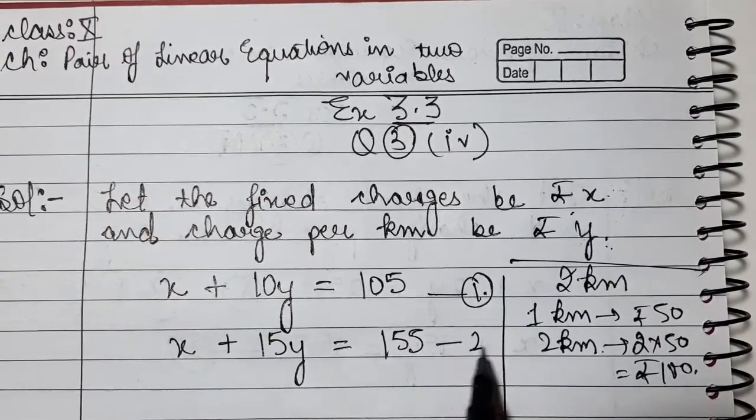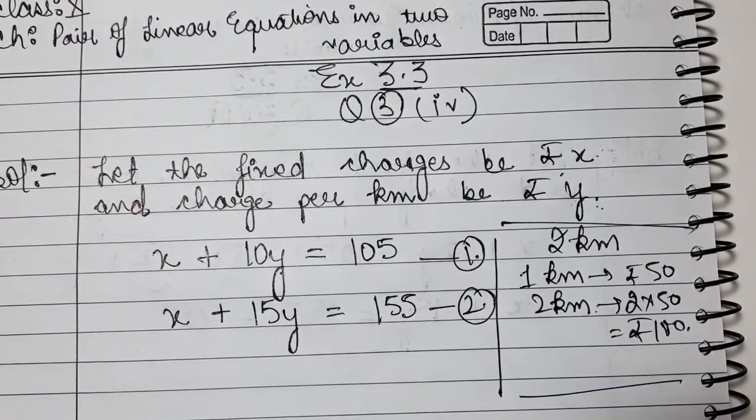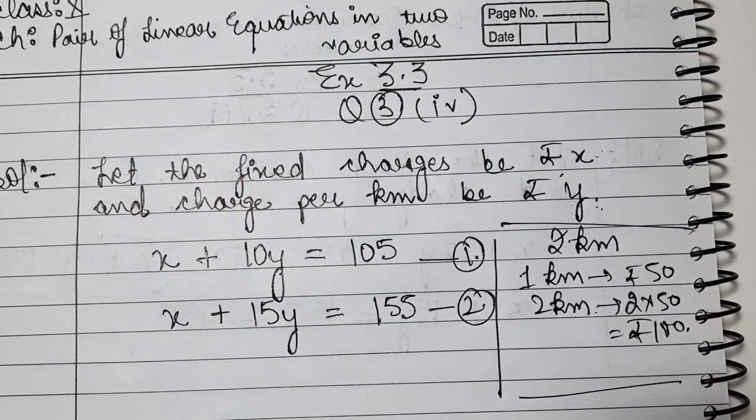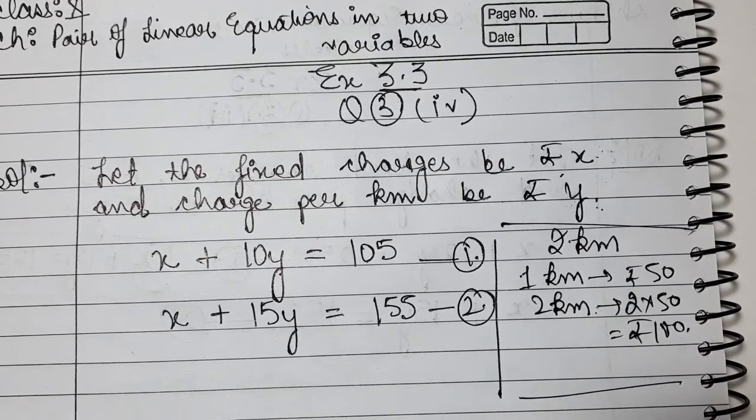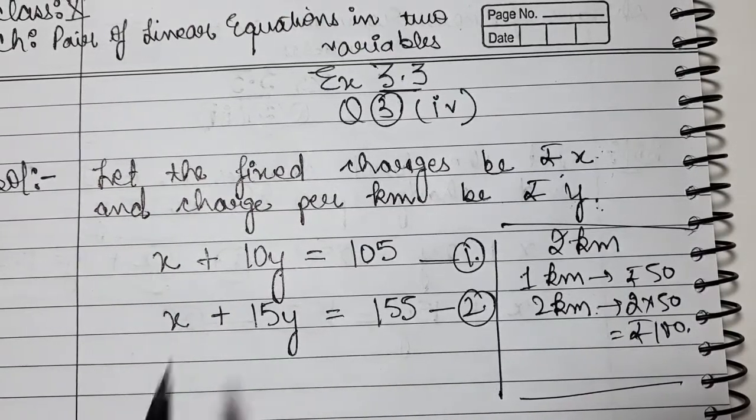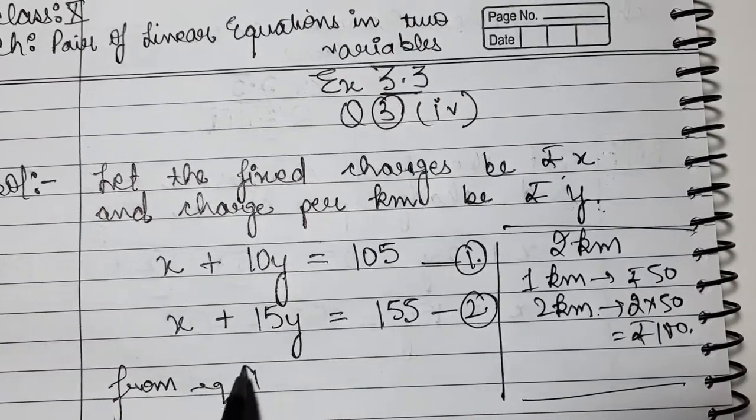Our equations are formed. Now we need to solve them using substitution method. In substitution method, we take one variable's value in terms of the other variable from whichever equation seems easier, and put it in the other equation. I'll choose the first equation.